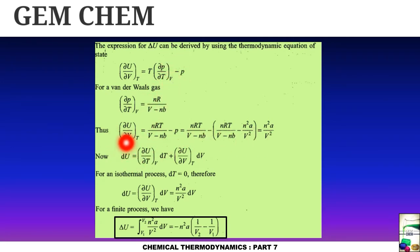So from here if we take delta V on this side, then dU equals to delta U delta T at constant V dT plus delta U by delta V at constant T dV. And we know for an isothermal process, dT equals to zero, so this term gets zero and the other term remains. And ultimately delta U by delta V is given by n square a by V square.